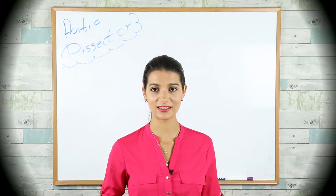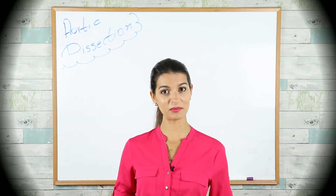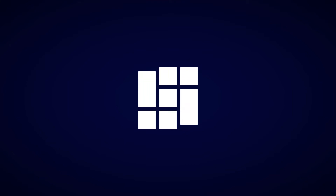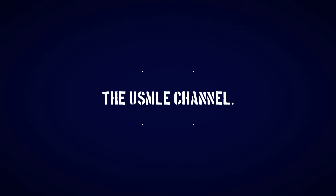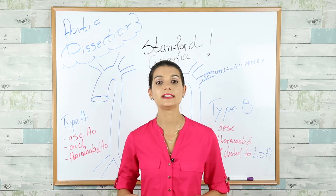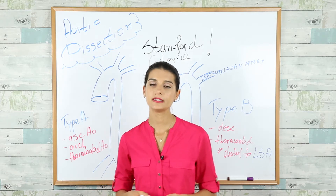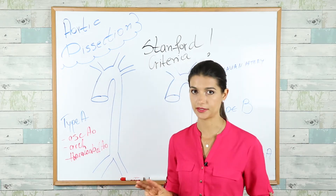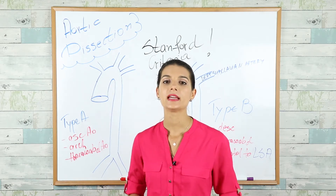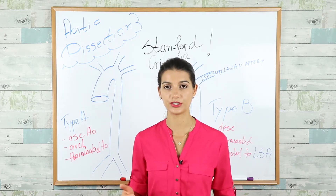Aortic dissection explained in detail for all three steps in one video. Let's start first with defining what dissection is. We know that the aortic wall has three layers. The most inner one is called intima, the middle one is media, and the outermost layer is called adventitia.